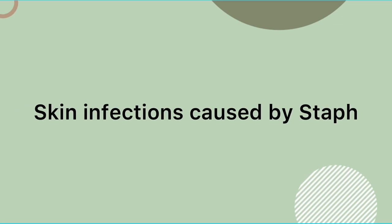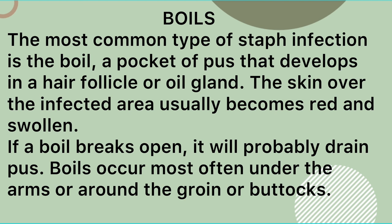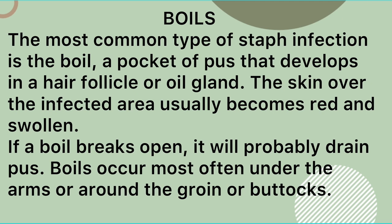Skin infections caused by staph include boils. The most common type of staph infection is the boil, a pocket of pus that develops in a hair follicle or oil gland. The skin over the infected area usually becomes red and swollen. If a boil breaks open, it will probably drain pus. Boils occur most often under the arms or around the groin or buttocks.